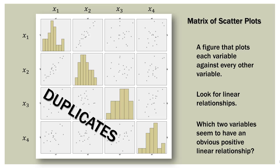Based on this matrix, which two variables seem to have an obvious positive linear relationship? Well, if you said x1 and x2, that would be correct. Most real-world data looks like the other scatterplots, where it's hard to see any discernible pattern — they're there, but it's hard to see. With x1 and x2, it's very obvious that there is a positive linear relationship. But when you're dealing with several variables, this is an easy way to take a quick look at your data and see what relationships may or may not exist.